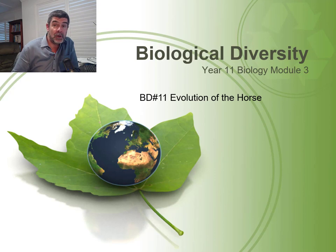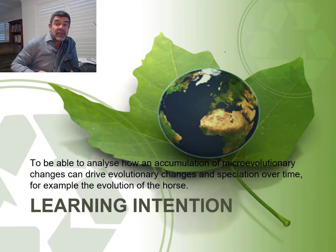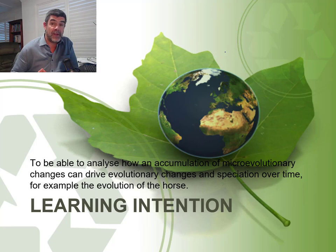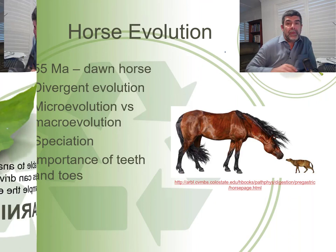Hi students, welcome to Year 11 Biology and module number three, Biological Diversity. This is video number 11 and we're going to delve a little bit into the evolution of the horse. Our learning intention in this video is to analyse how an accumulation of micro evolutionary changes can drive evolutionary change and speciation over time, using the example of evolution in the horse to support this idea.